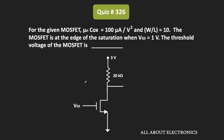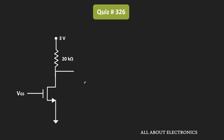This circuit works at the edge of the saturation whenever the voltage Vgs is equal to 1V. For the given MOSFET circuit, we have been asked to find the threshold voltage of the MOSFET. We know that the MOSFET will operate in the saturation region whenever Vds is greater than or equal to Vgs - Vt, where Vt is the threshold voltage.